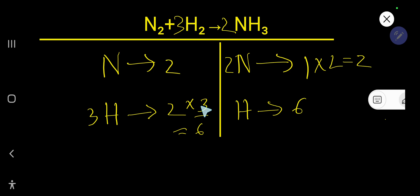Now check. 3 times 2 is 6. So everything is balanced. 2 to 6 is 6. So this is the balanced chemical equation.